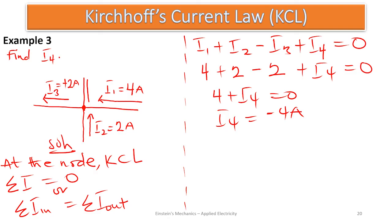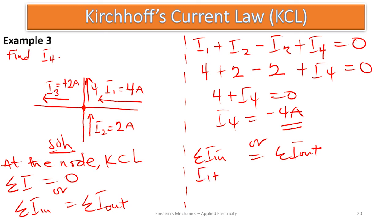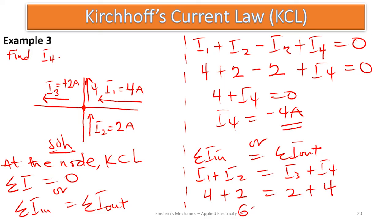i4 is negative 4 amperes, meaning i4 is leaving the node by 4 amperes. Verifying: summation of i in equals summation of i out. Those entering: i1 plus i2; those leaving: i3 plus i4. So 4 plus 2 equals 2 plus 4, which gives 6 amperes equals 6 amperes. Thank you for watching this episode.